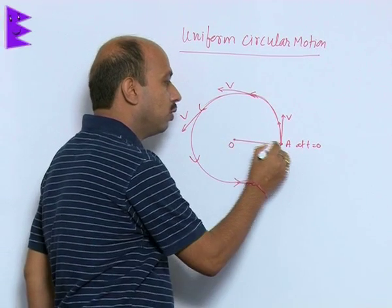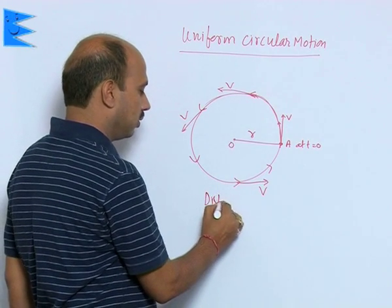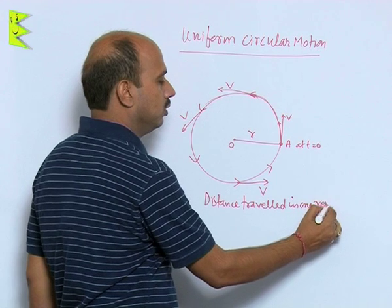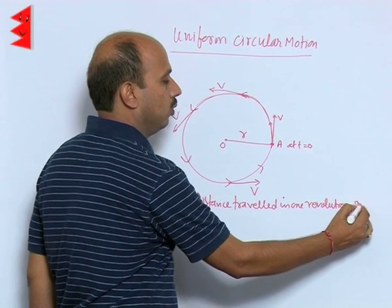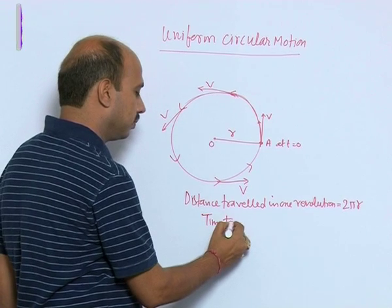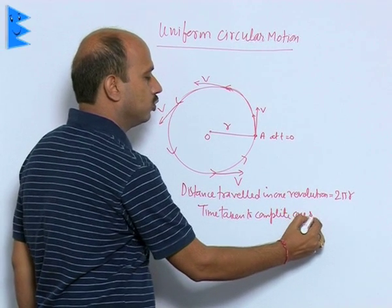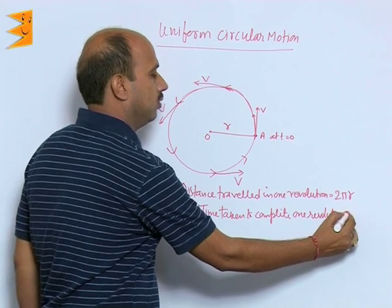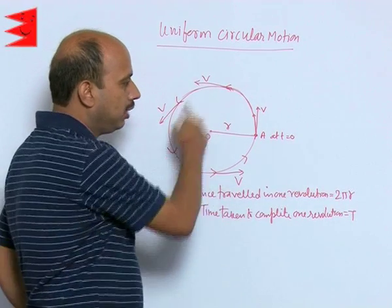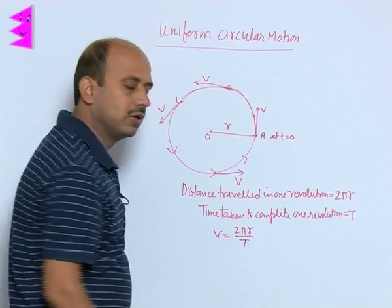If this circular path has got radius r, so we can write distance travelled in one revolution is equal to 2 pi r. Suppose time taken to complete one revolution is t. So total distance in one revolution you have got 2 pi r, total time to complete one revolution you have got t. So now you can calculate velocity easily, that is 2 pi r upon t, that is distance upon time.